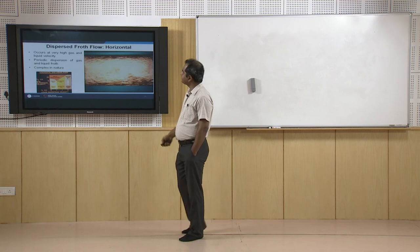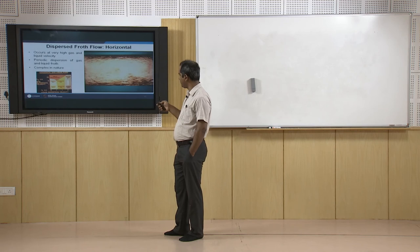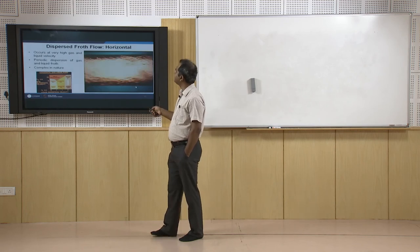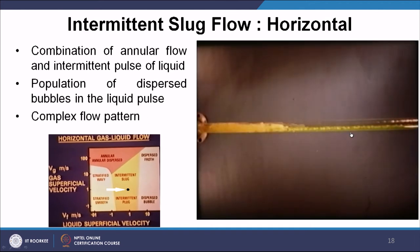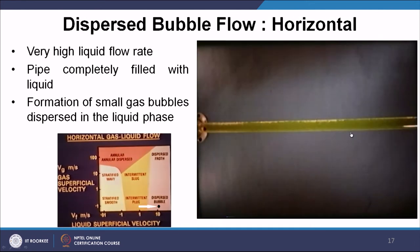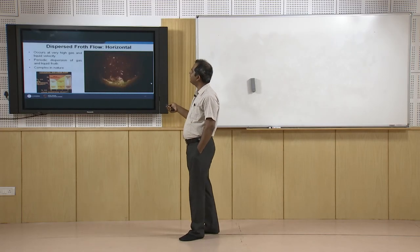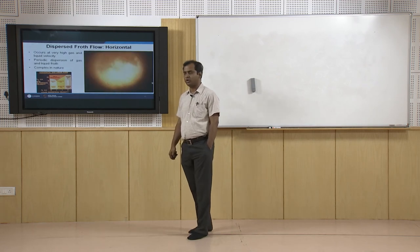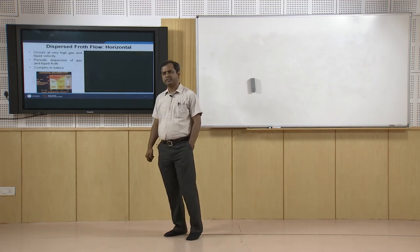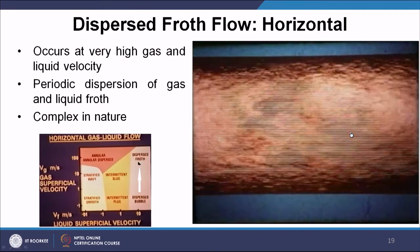Dispersed froth flow is also observed in horizontal regimes. It occurs at very high gas and liquid superficial velocities — from dispersed bubble flow, increasing the gas superficial velocity leads to this dispersed froth regime. It features periods of gas dispersion and liquid froth in the cross section, and is very complex in nature, requiring understanding of bubble dispersion and interfacial phenomena.